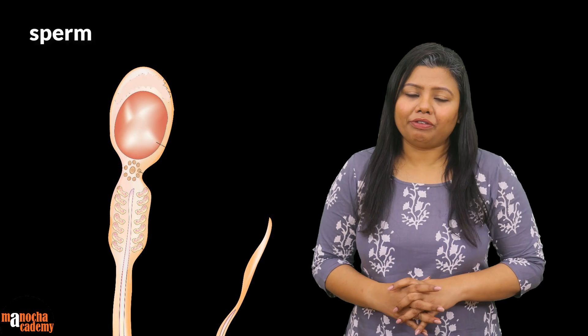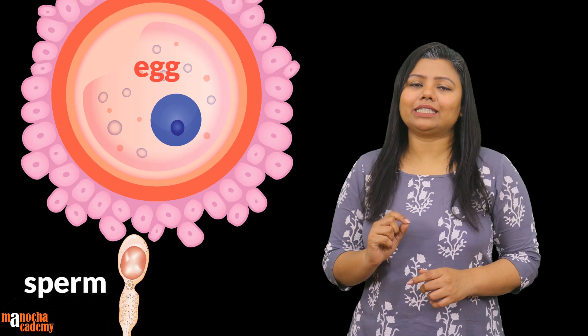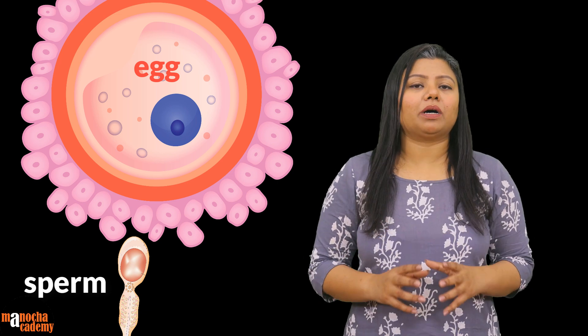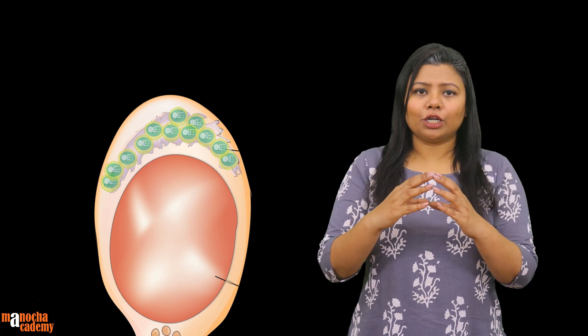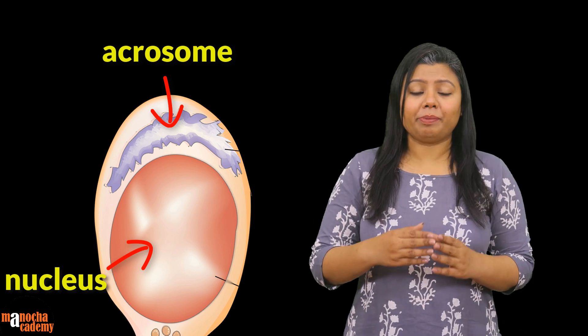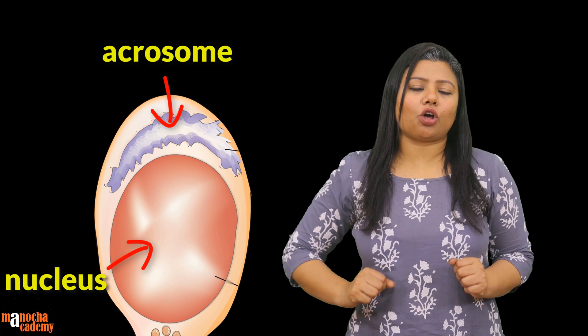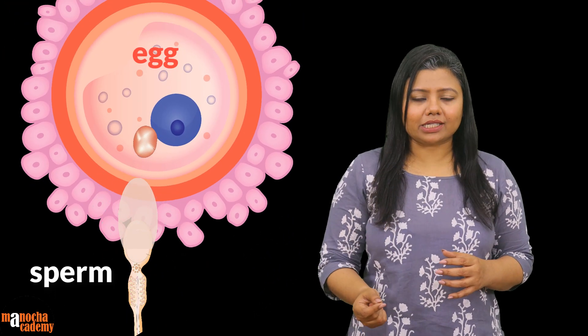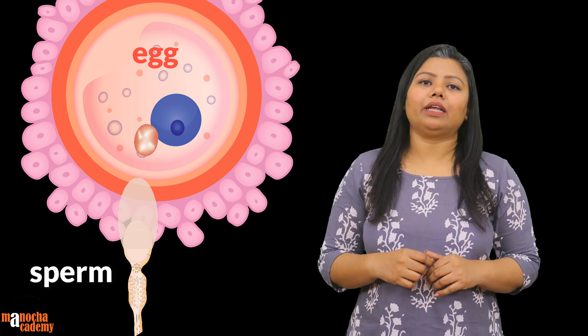In the case of sperm, the sperm requires certain enzymes for digesting the membranes surrounding the egg. The Golgi bodies present in the sperm cell contain those enzymes. During sperm formation, all the Golgi bodies of the sperm cell come together to form a single sac called the acrosome, which remains as a cap on the nucleus of the sperm. On reaching the egg, the acrosome bursts open, releasing the enzymes that digest the membranes covering the egg.